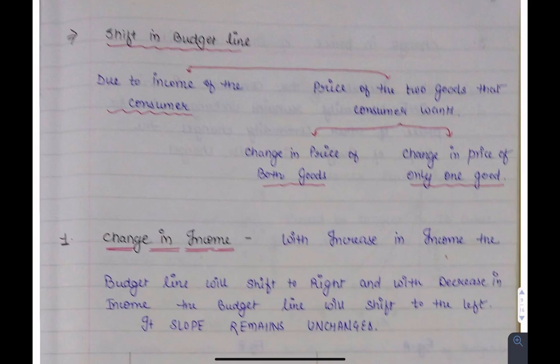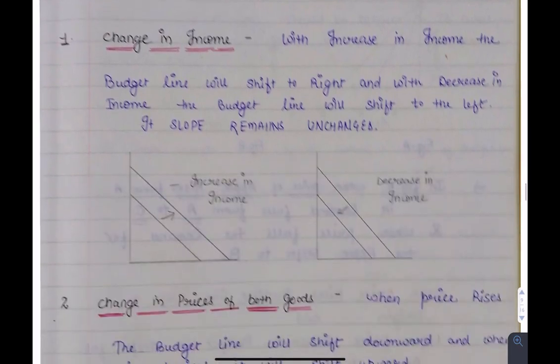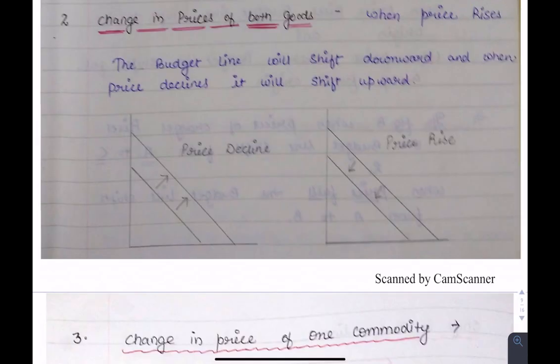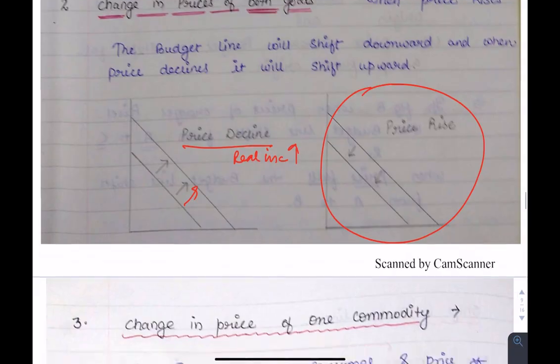The shifts in the budget line are due to many reasons. First, change in income: if income increases, the budget line shifts to the right; if it decreases, it shifts to the left. Second, changes in prices of both goods: if both prices increase or decrease, the budget line will shift parallelly. If price decreases, real income is increasing, so the budget line shifts right; in the opposite case, it shifts left.